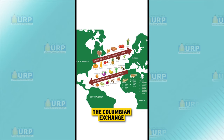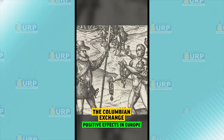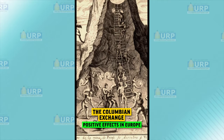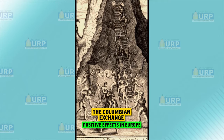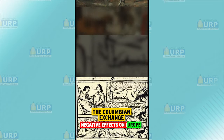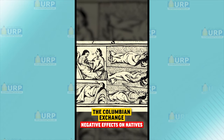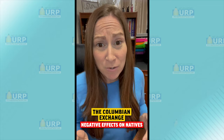Third, the Columbian Exchange demonstrated a colliding of cultures as the New World and Old World came together. New plants, animals, and other resources changed the European economy and caused a population boom. But the impact on Natives was overwhelmingly negative, as Old World diseases devastated communities.